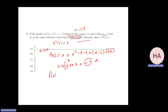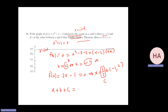f prime of x is 2x − 1. Setting equal to 0 gives x = 1/2, which belongs to the interval (−1, 2), so c = 1/2. Then a + b + c = −1 + 2 + 1/2 = 3/2.